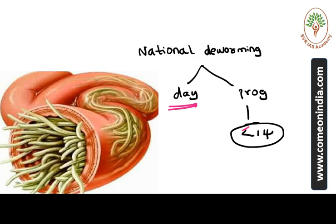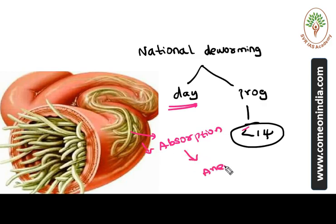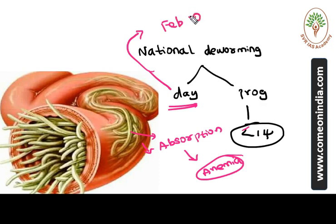If worm infection occurs, it interferes with the absorption of nutrients. Nutrients do not reach children properly, making them anemic and malnourished, and their mental and physical development gets affected. So deworming is an important practice in the Indian context. Prepare well on the National Deworming Day, National Deworming Program, and the link between threadworm and active tuberculosis.